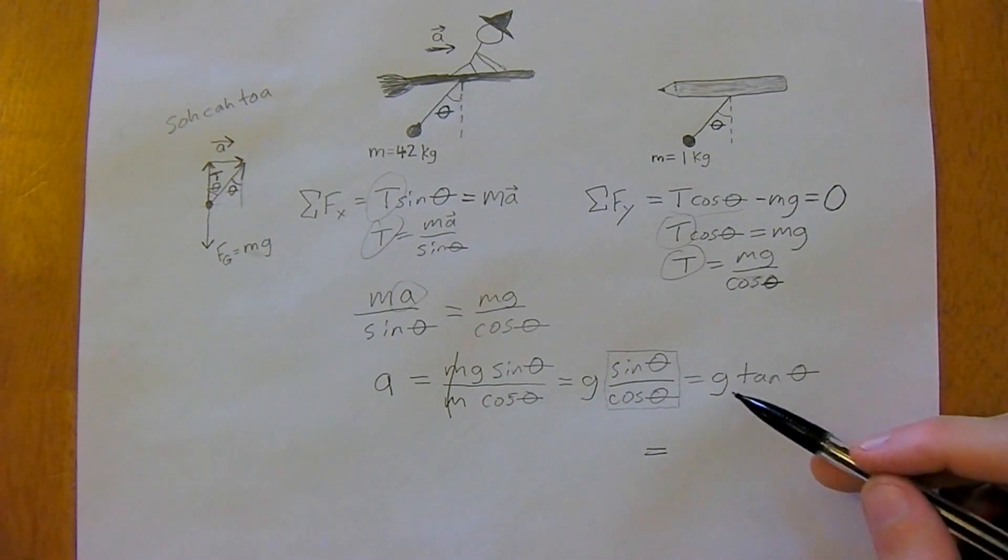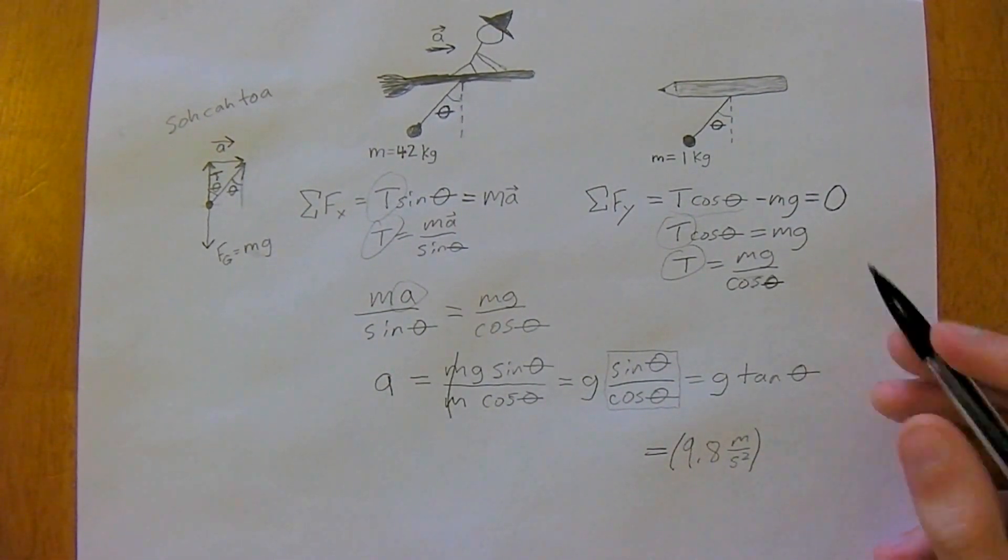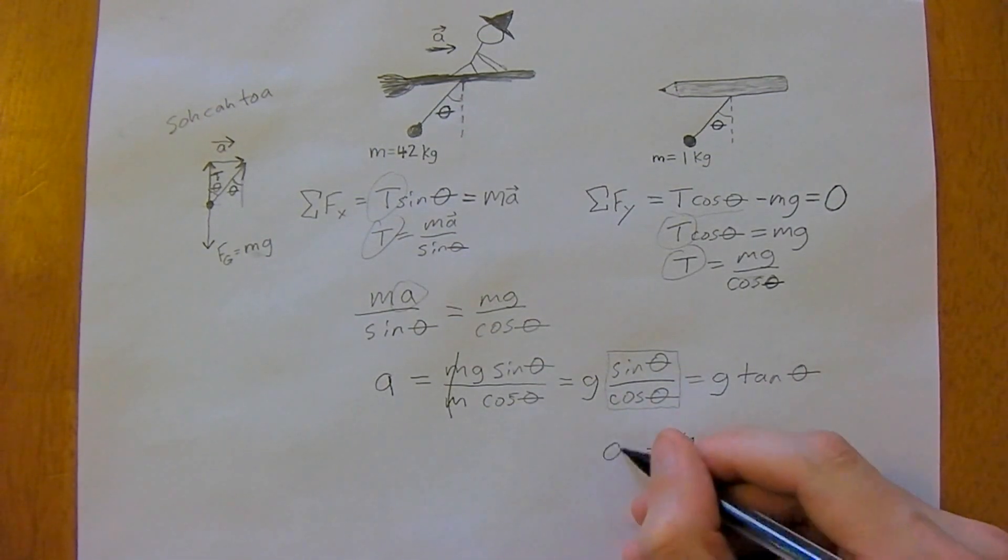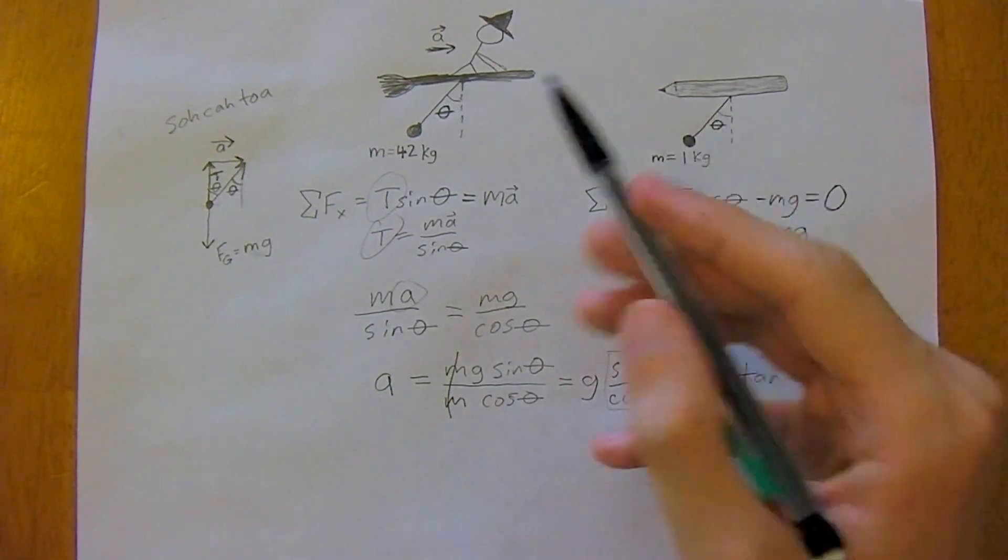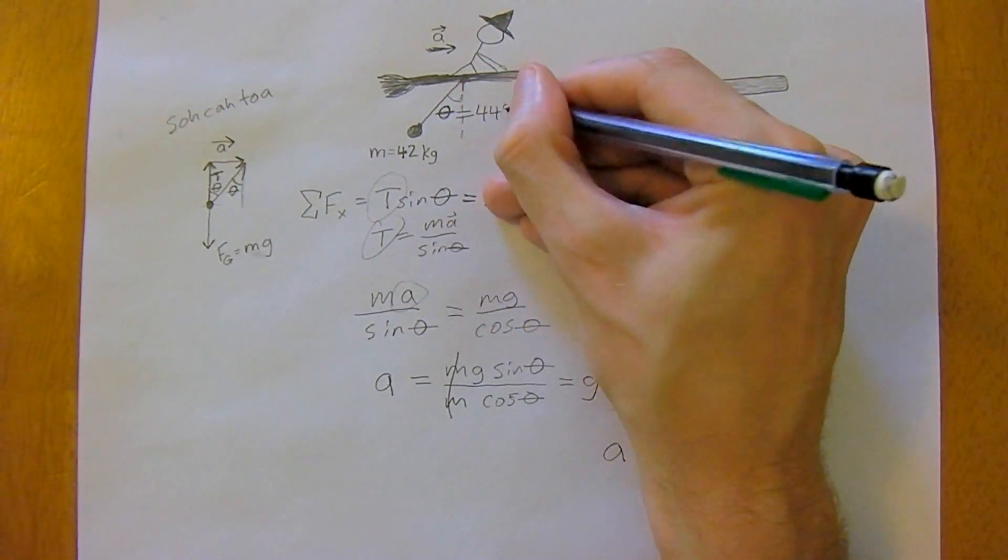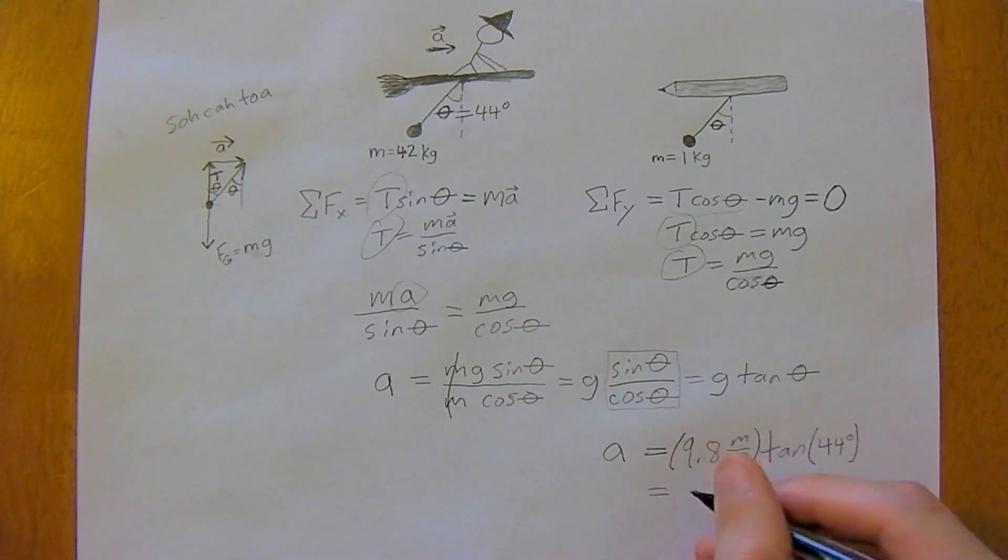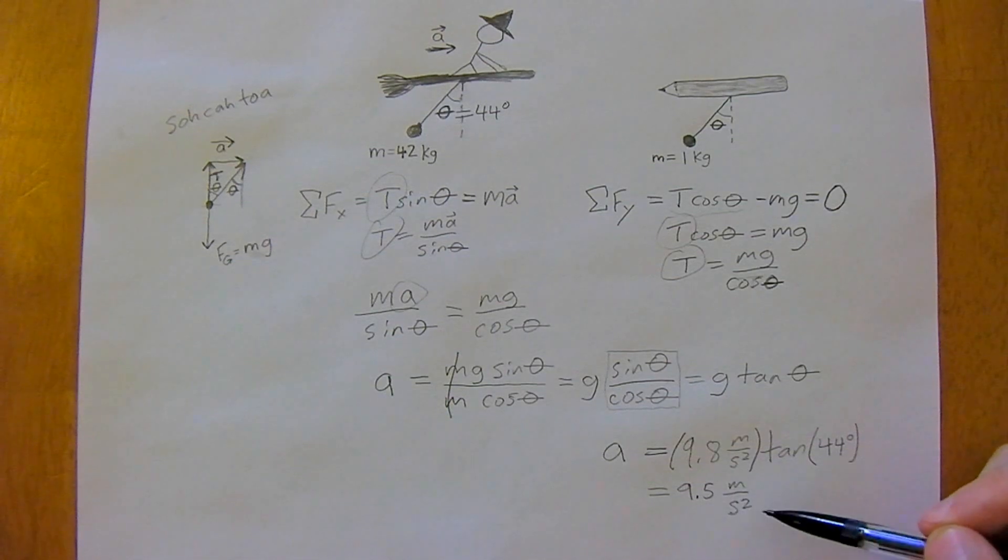We have g, which is just 9.8 meters per second squared—it's just a constant, the gravitational acceleration of earth—and we have tan theta. Our angle—it didn't actually give you an angle, but we'll say an angle of 44 degrees just arbitrarily. So tan of 44 degrees, and that's going to be equal to 9.5 meters per second squared.